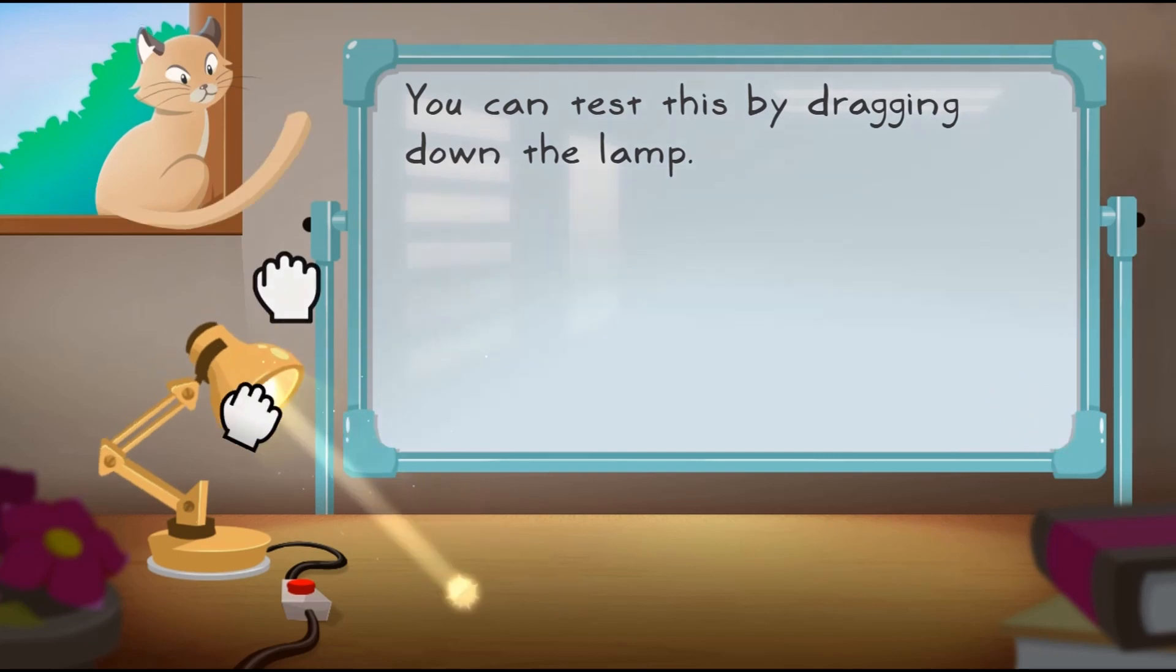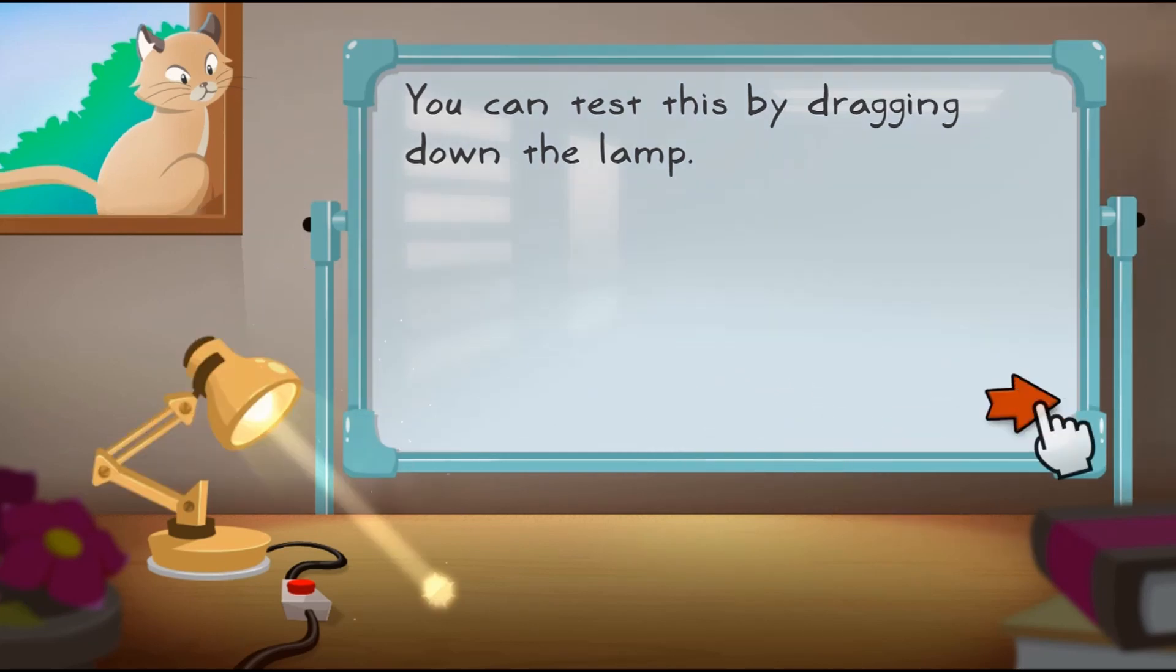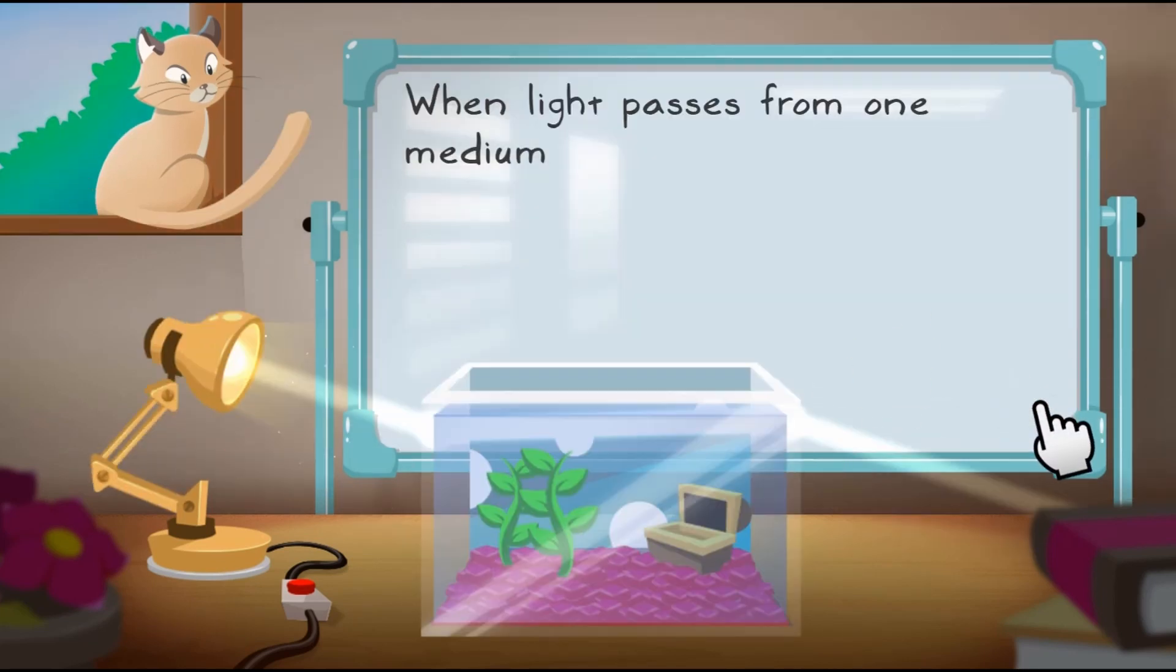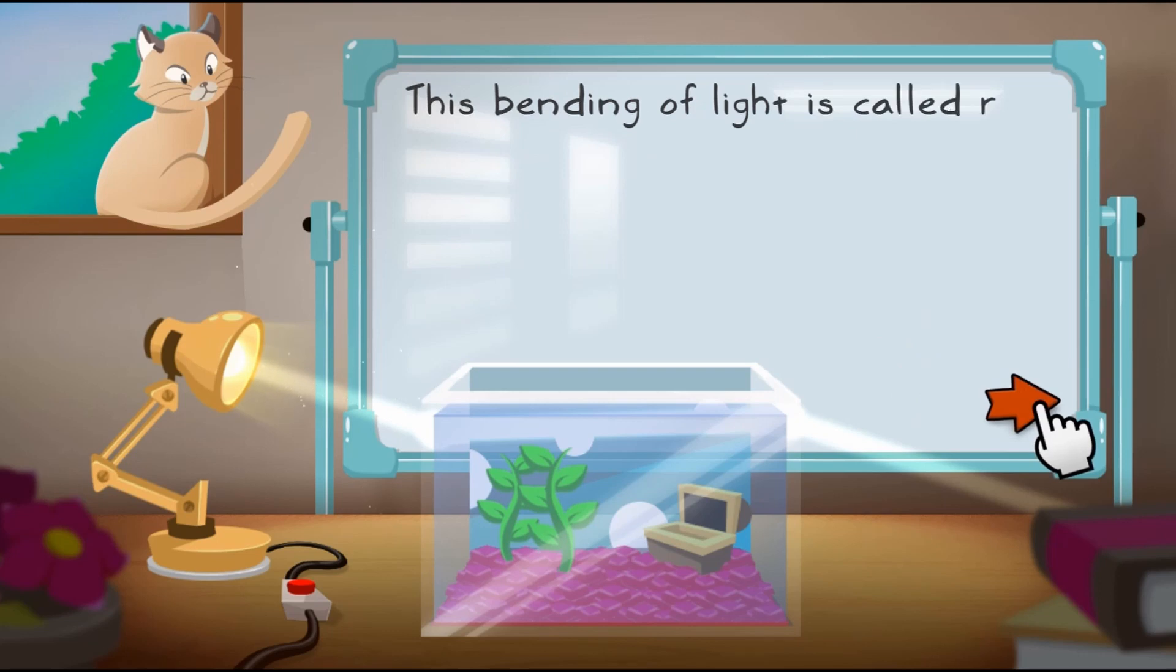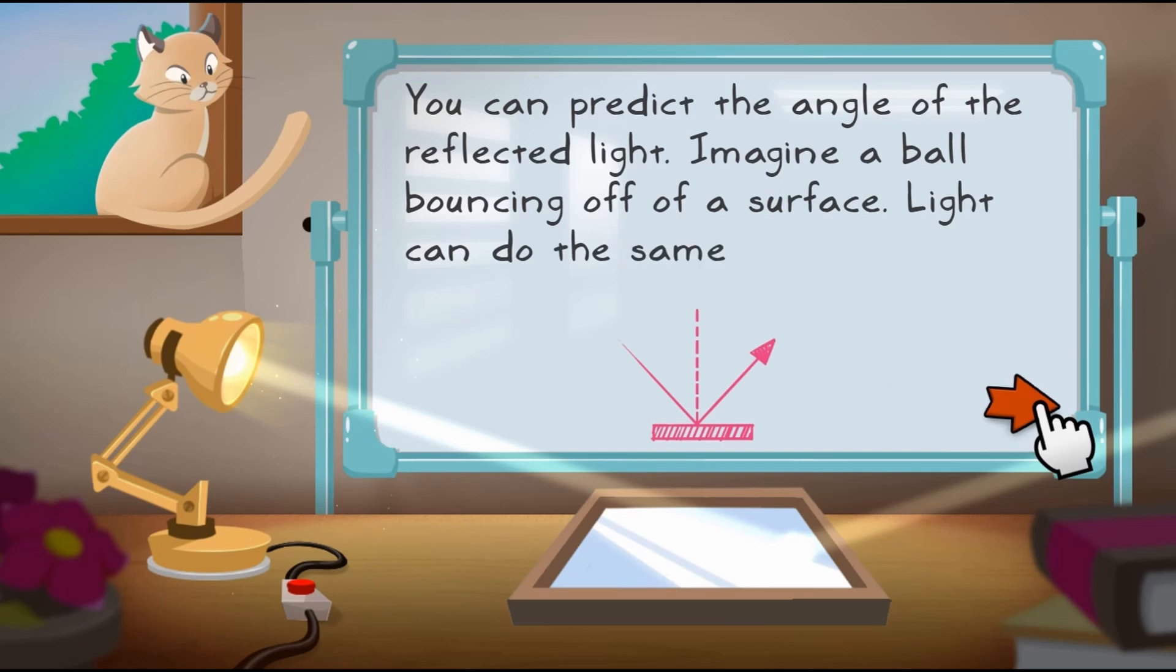In this informative instructional game, experiment with the properties of light by moving around light sources, mirrors, and other objects after a short introduction on reflection, refraction, opaque materials, transparent materials, and translucent materials.